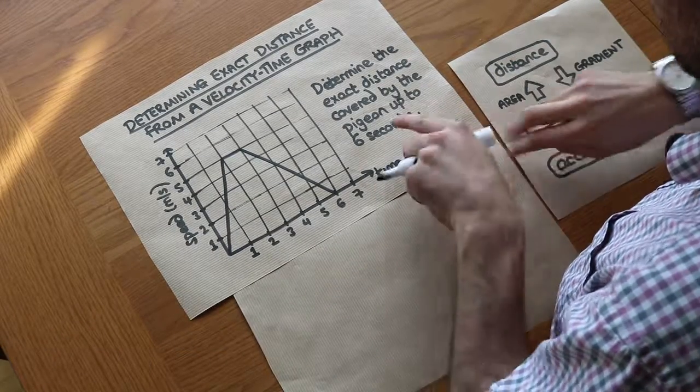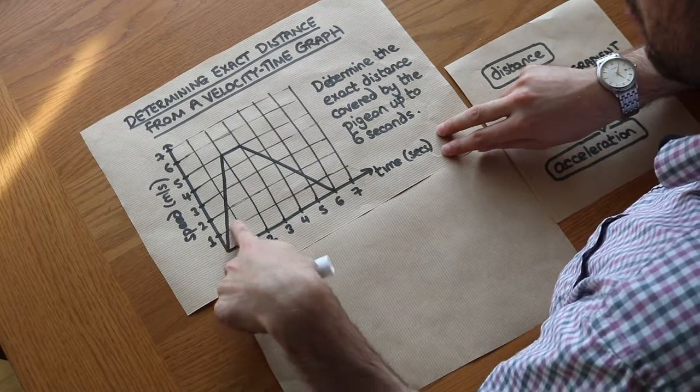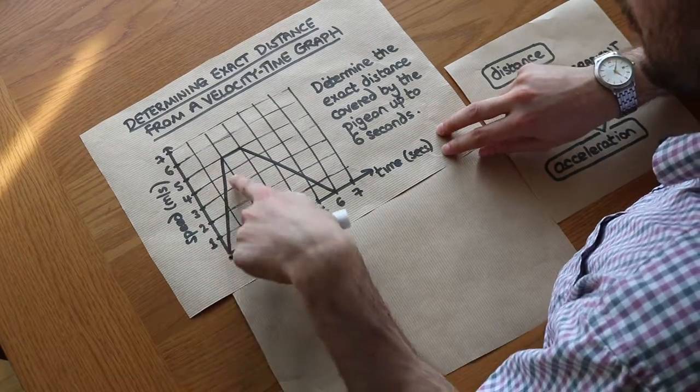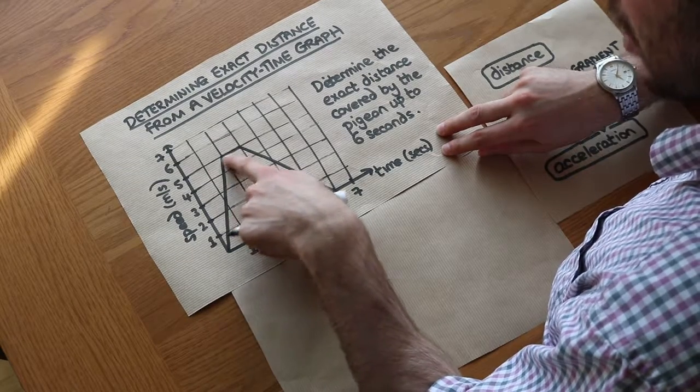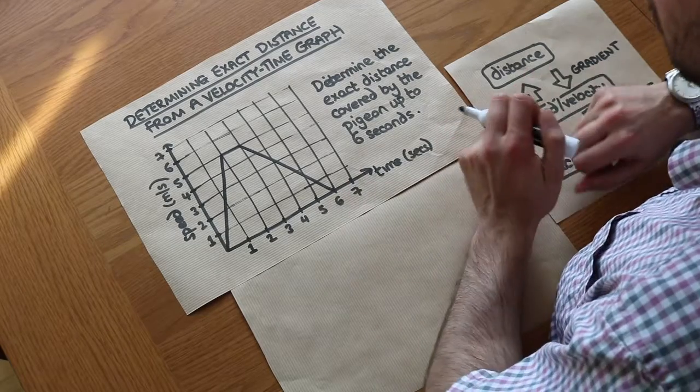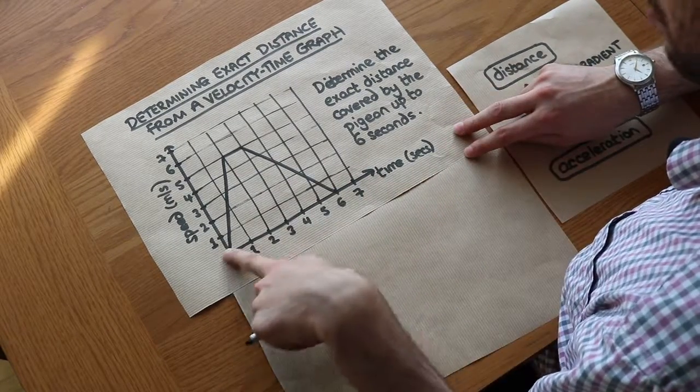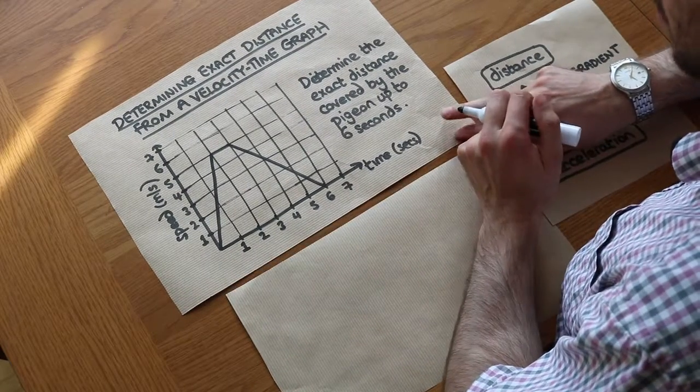We've got this speed time graph here showing a pigeon traveling along. Over time the pigeon is gradually getting faster and faster, then going at constant speed, and then gradually slowing down until he's not moving. We want to find the distance that the pigeon has traveled up until the sixth second mark.